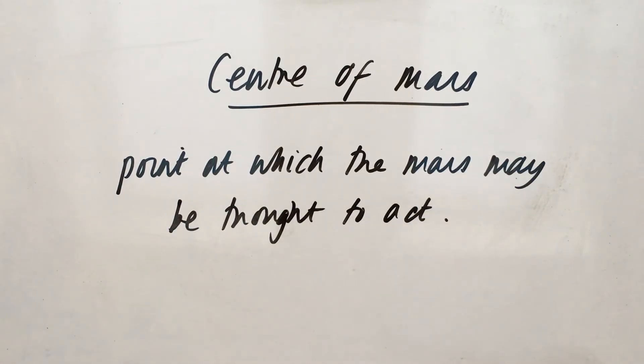Now, that centre of mass can actually be outside of the object. So, for example, in a tyre, the centre of mass is actually in the centre of the tyre in the space where there is no actual tyre.